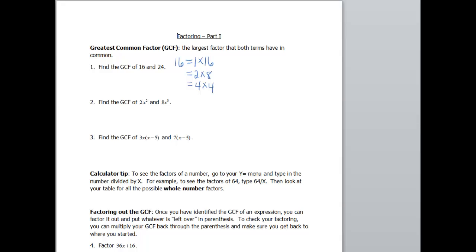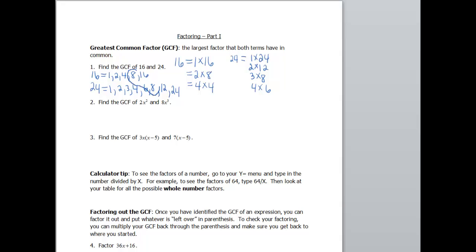Now let's do the same thing for 24. It can be factored as 1 and 24, 2 and 12, 3 and 8, and 4 and 6. So comparing these two — the factors of 16 are 1, 2, 4, 8, and 16; the factors of 24 are 1, 2, 3, 4, 6, 8, 12, and 24. The biggest number on both lists is 8.